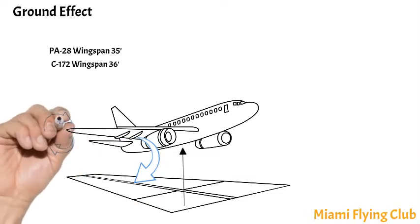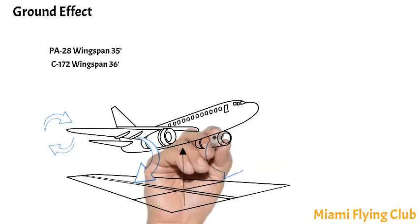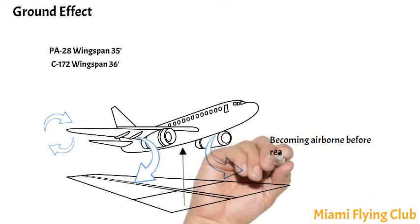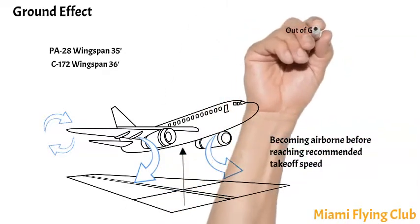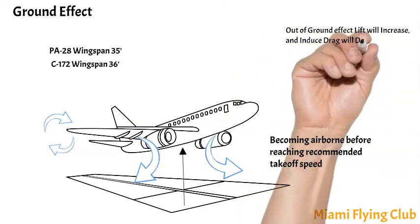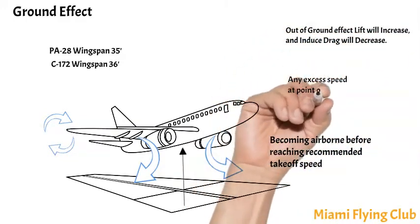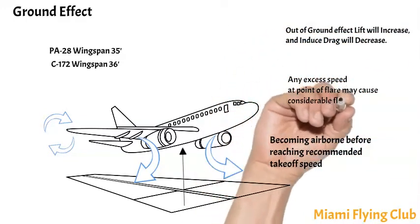In ground effect, the airplane may seem capable of takeoff before reaching recommended takeoff speed. Out of ground effect, lift will decrease and induced drag will increase. Any excess speed at the point of flare may cause considerable floating.